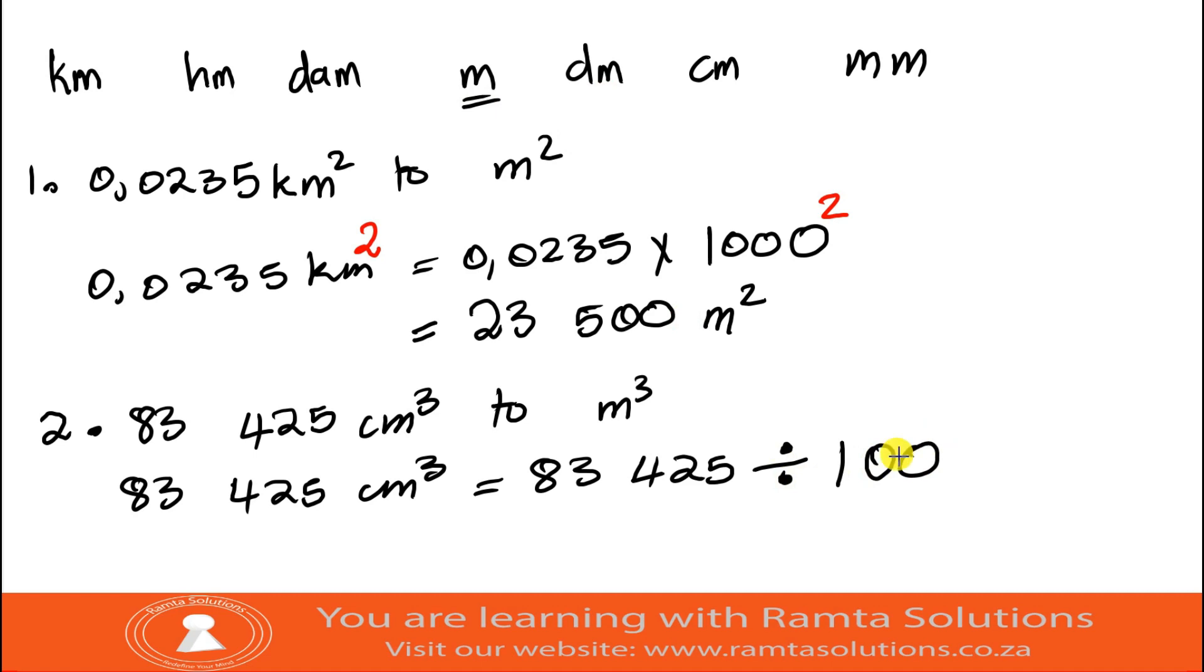Remember, now it's not centimeter to meter, it's cubic centimeter to cubic meter, so this hundred we will cube it. Now what is our answer? Let's see, 83,425 divided by hundred cubed, what is it?